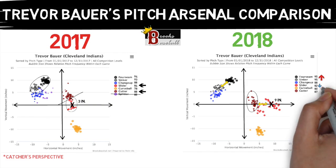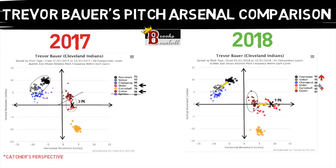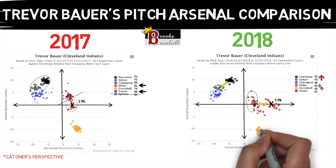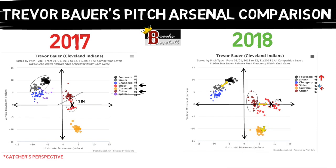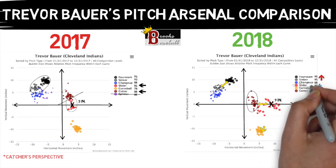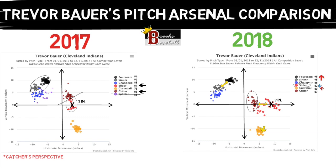Lastly, his curveball didn't see a huge change, but he is throwing it harder and with more induced vertical break. All in all, this pretty much alone could tell you why Bauer saw so much success this year. His pitches were all thrown harder on average, with more break and more separation between one another — and that's exactly what we talked about in the last video. If Bauer really did focus on something in the offseason, my guess is he spent the largest portion of time working on his slider, and for good reason. He used it much more consistently and it was nasty.